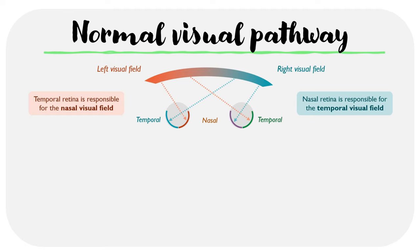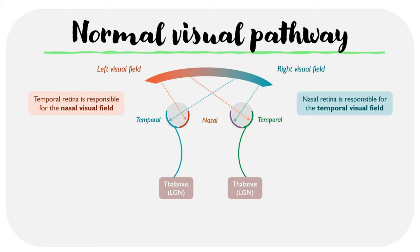When light hits the temporal retina on one side, the impulse is carried via nerve fibers to the thalamus on the same side — specifically a part called the lateral geniculate nucleus — and this happens both on the left and on the right. However, when light hits the nasal retina, the fibers actually cross over to the contralateral side. The point where both nasal retinal fibers cross over is called the optic chiasm.